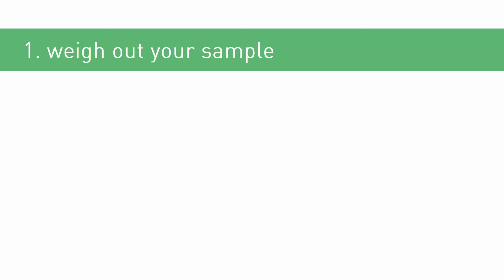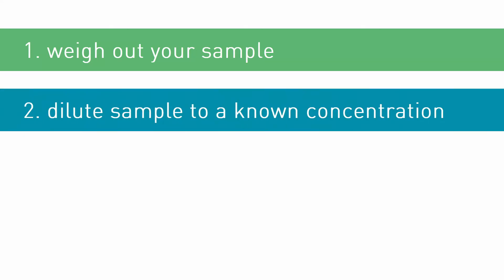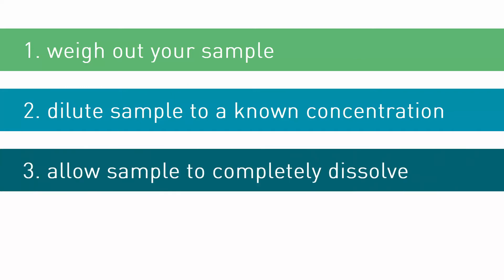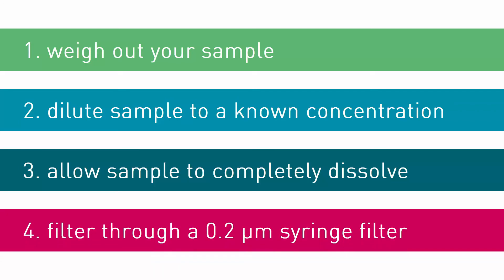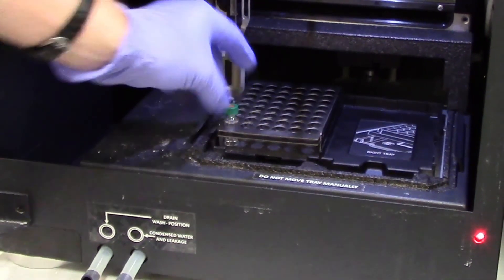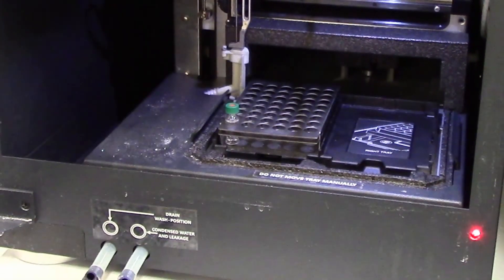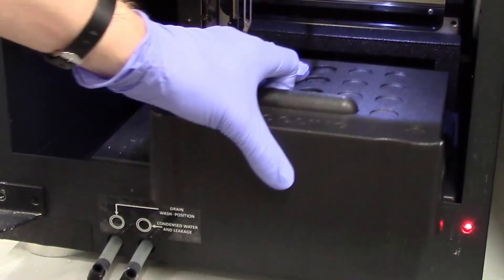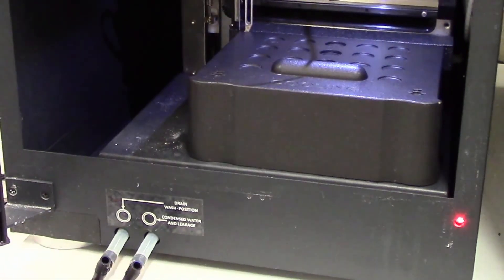So to recap: weigh out your sample, dilute your sample to a known concentration, allow your sample to completely dissolve under appropriate conditions, and filter your sample solution through a 0.2 micrometer syringe filter. Your sample is now ready to be injected into your GPC-SEC system. Good results are on their way.